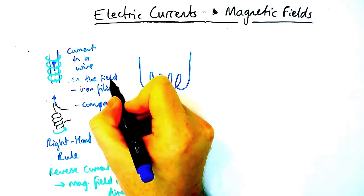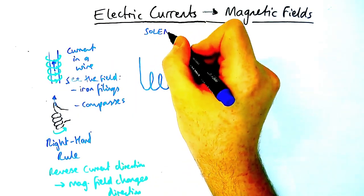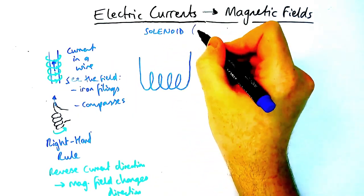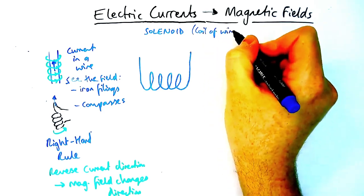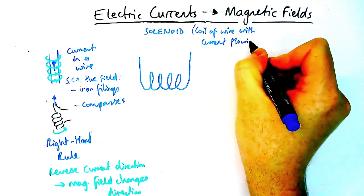If I wanted to make this field even stronger I can curl the wire up into a coil which has a very special name called a solenoid. It's just a coil of wire with some current flowing around it like the diagram shows here.